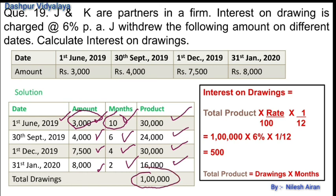Interest on drawings = total product × rate/100 × 1/12. Total product = rupees 1,00,000; rate = 6%. So interest = 1,00,000 × 6/100 × 1/12 = 6000 × 1/12 = rupees 500. So total interest on drawings using the product method is rupees 500.